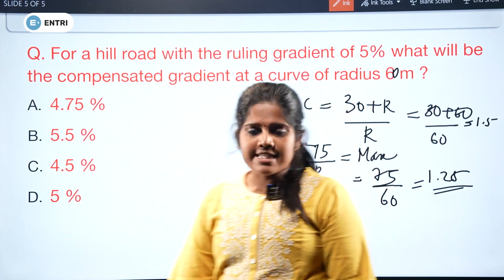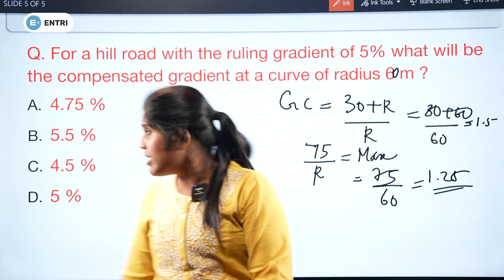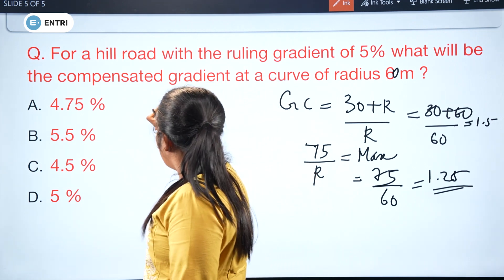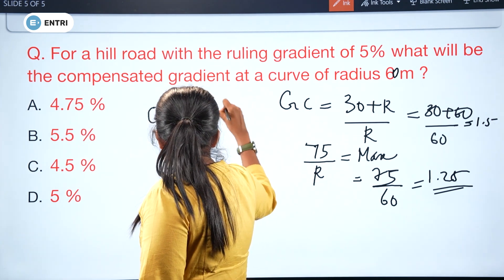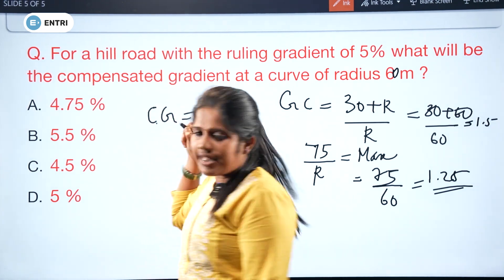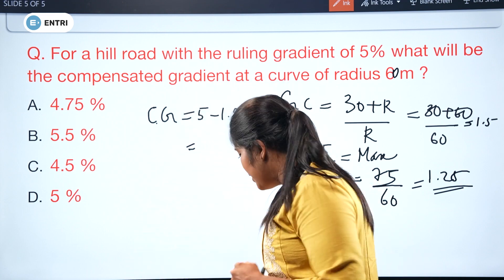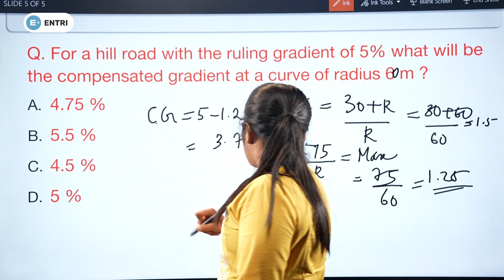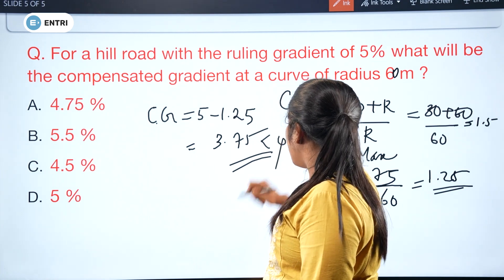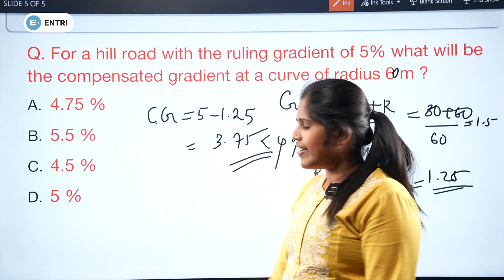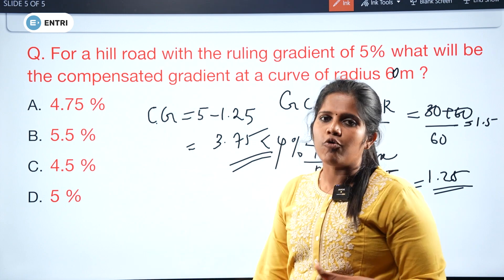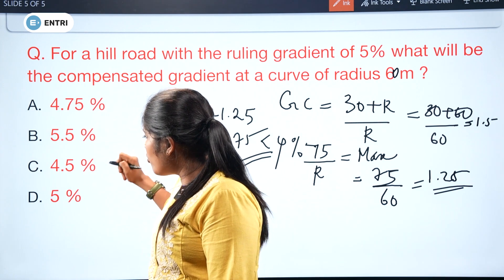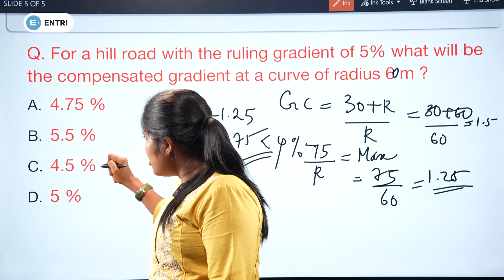Taking grade compensation as 1.25%, the compensated gradient equals rolling gradient minus grade compensation: 5 - 1.25 = 3.75%. Since this is less than 4%, the compensated gradient is 3.75%. The answer options are 4.75, 5.5, 4.5, and 5 percent.